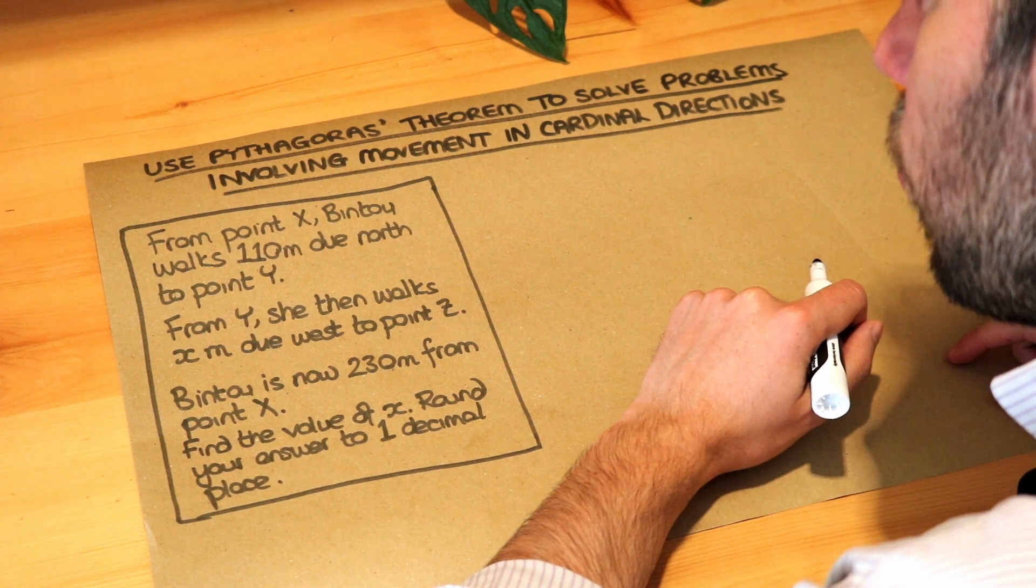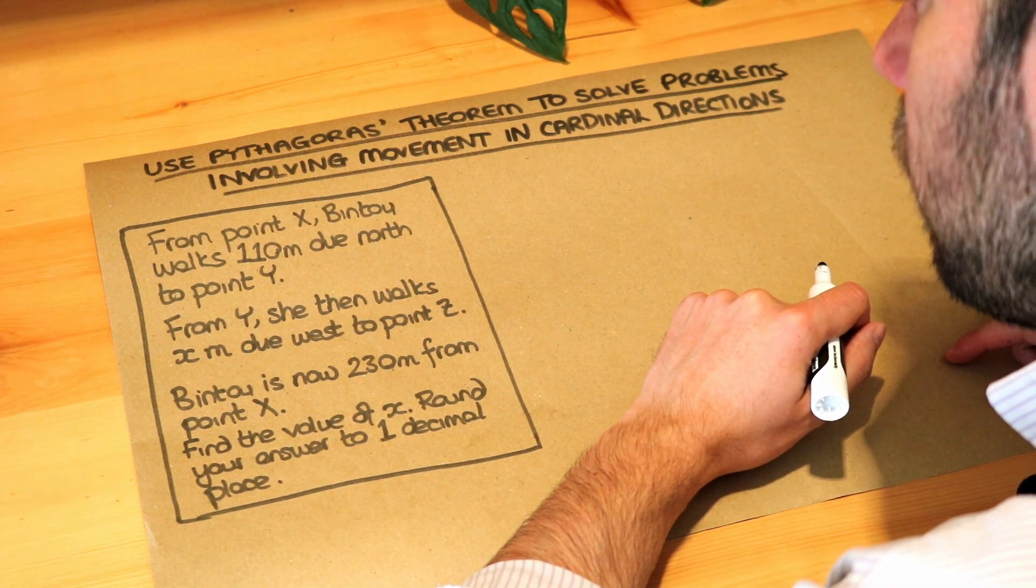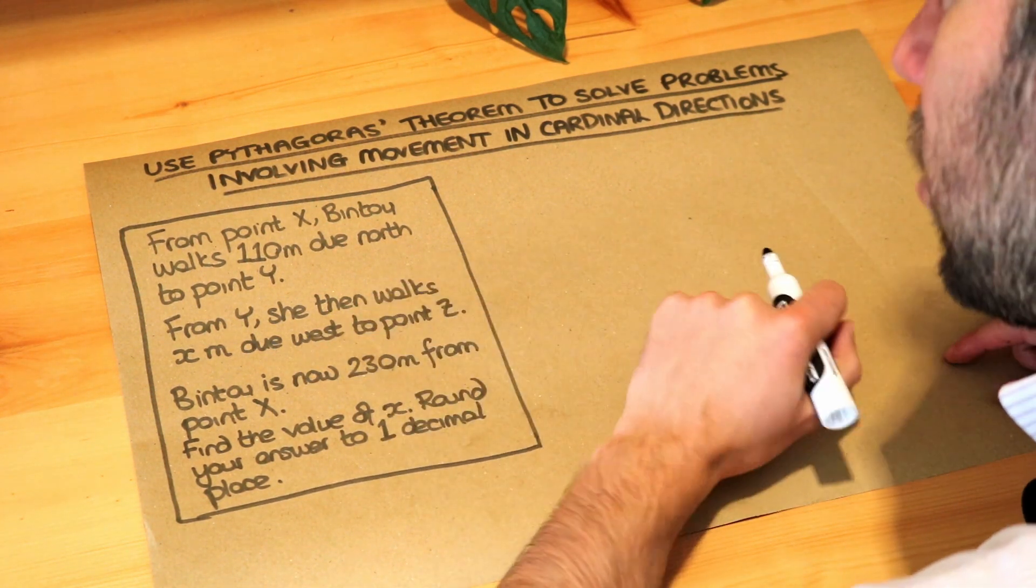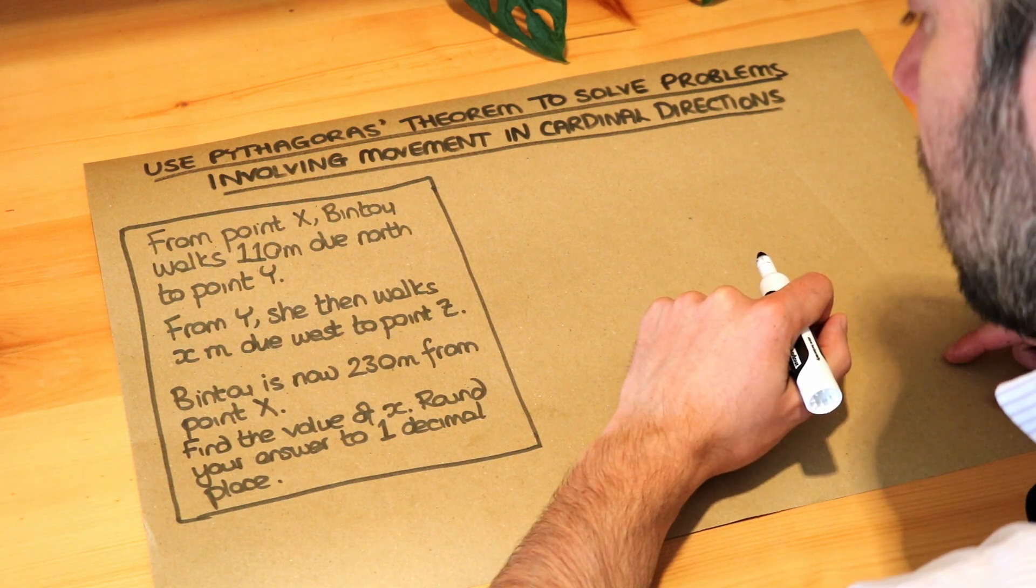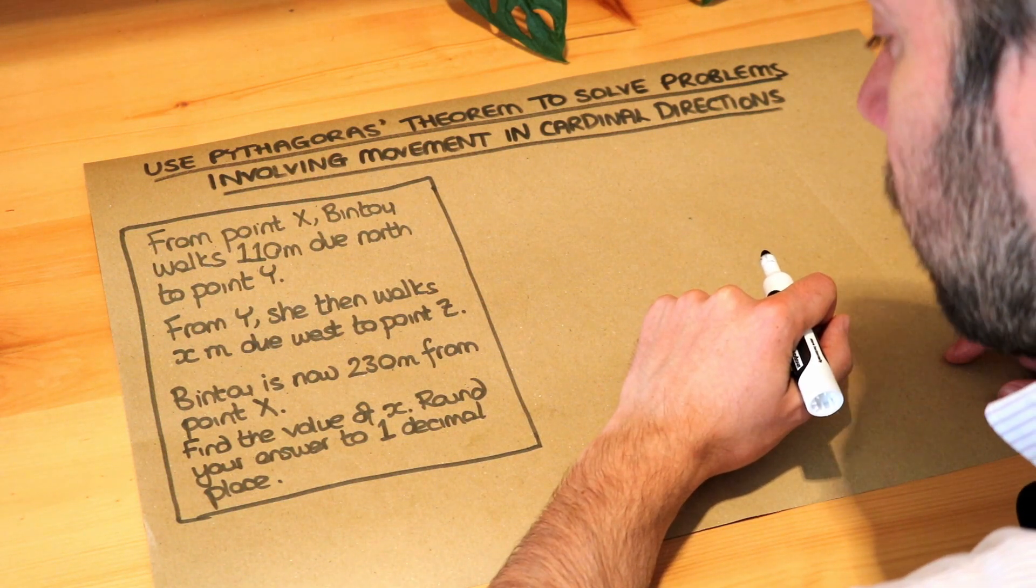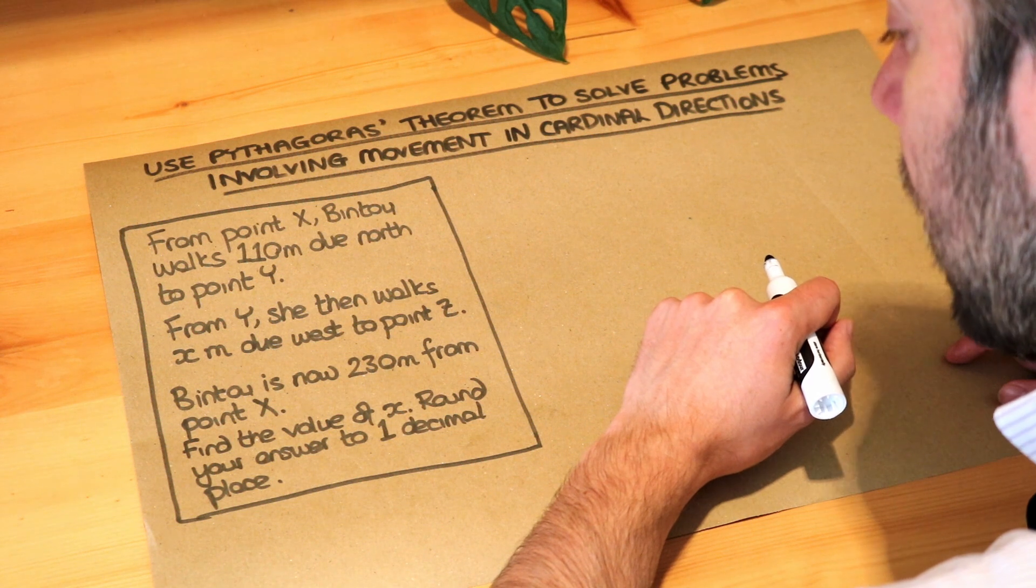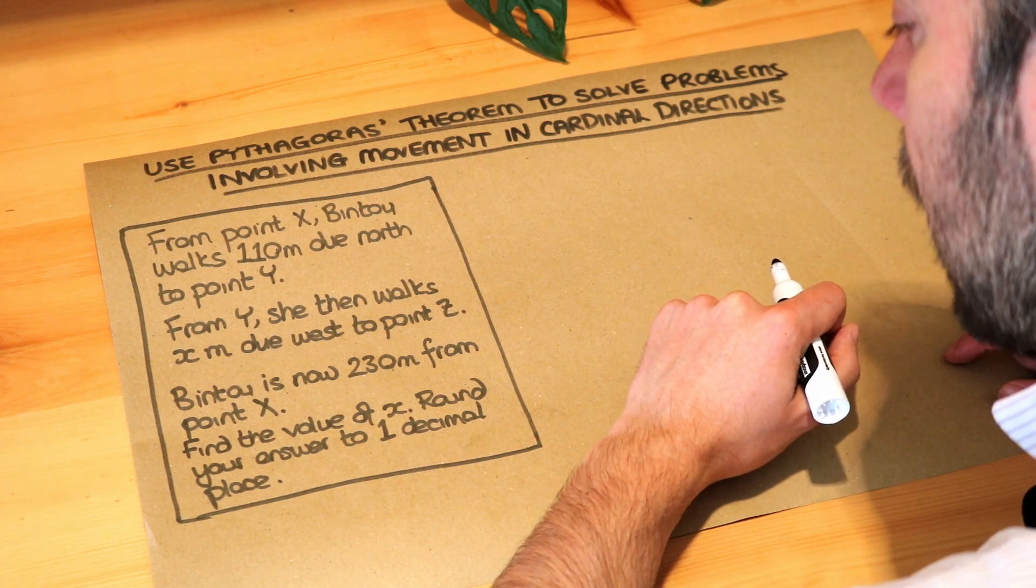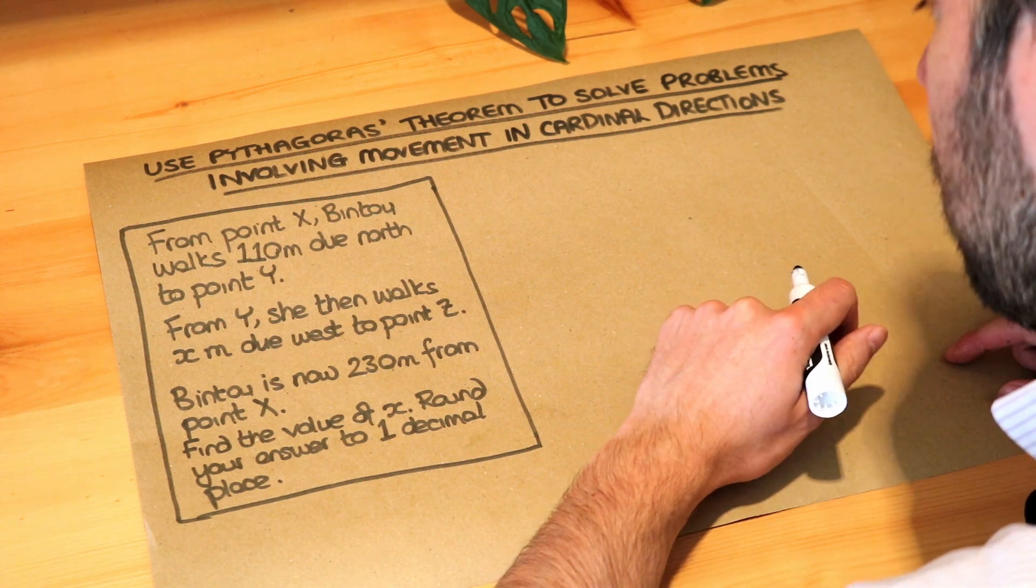From point X Bintu walks 110 meters due north to point Y. From Y she then walks x meters due west to point Z. Bintu is now 230 meters from point X. Find the value of x rounding your answer to one decimal place.